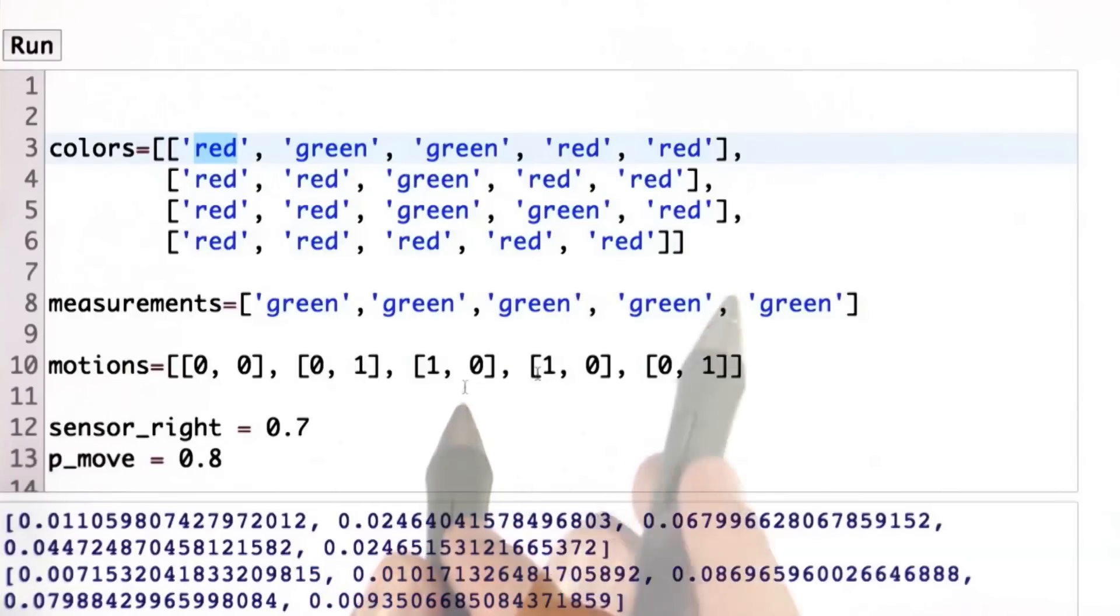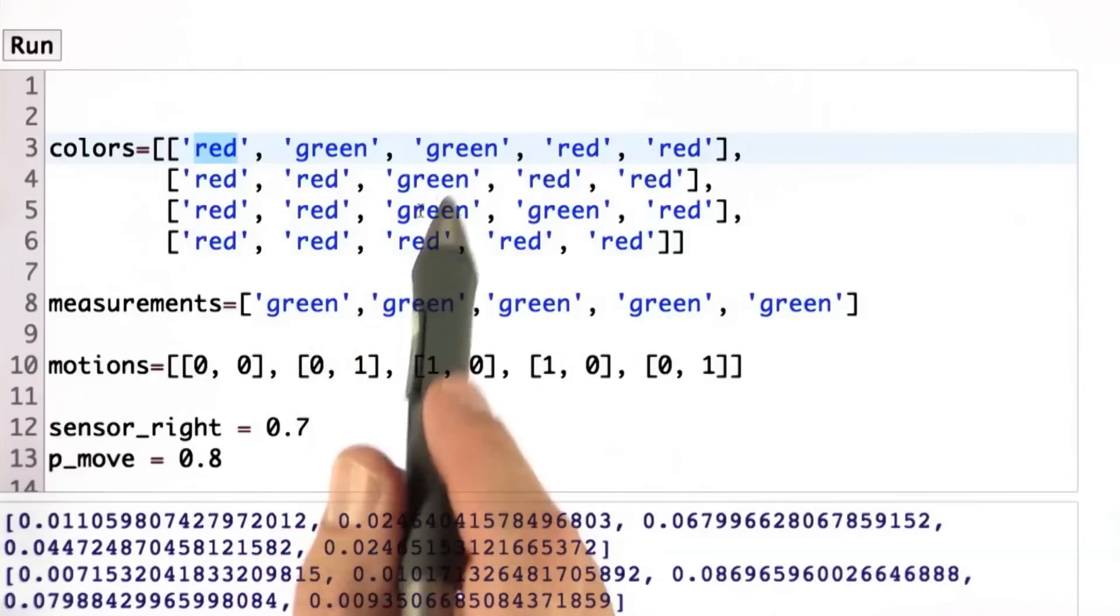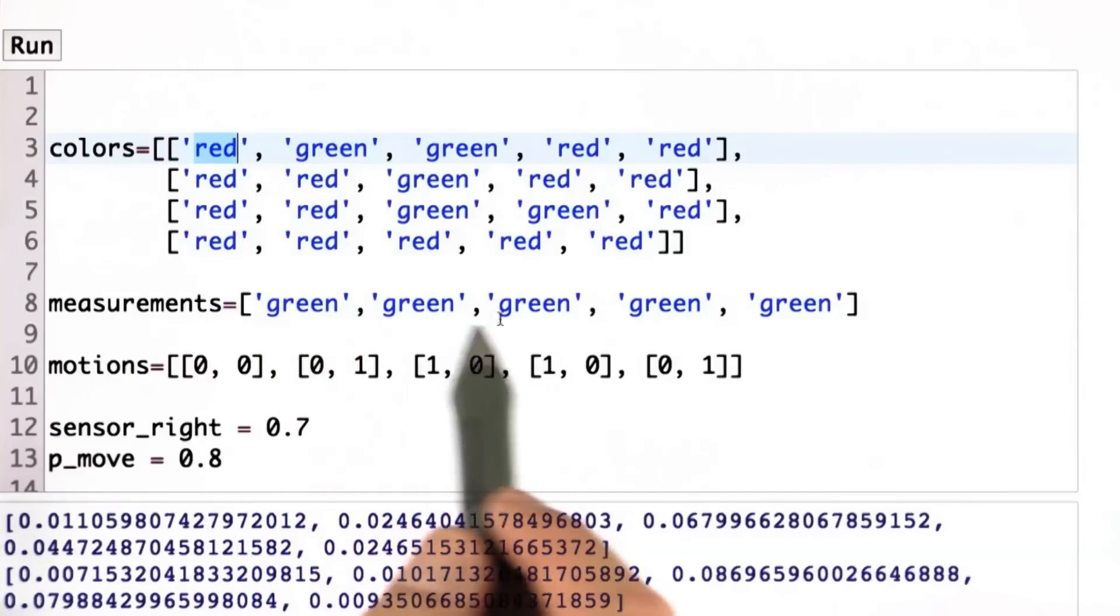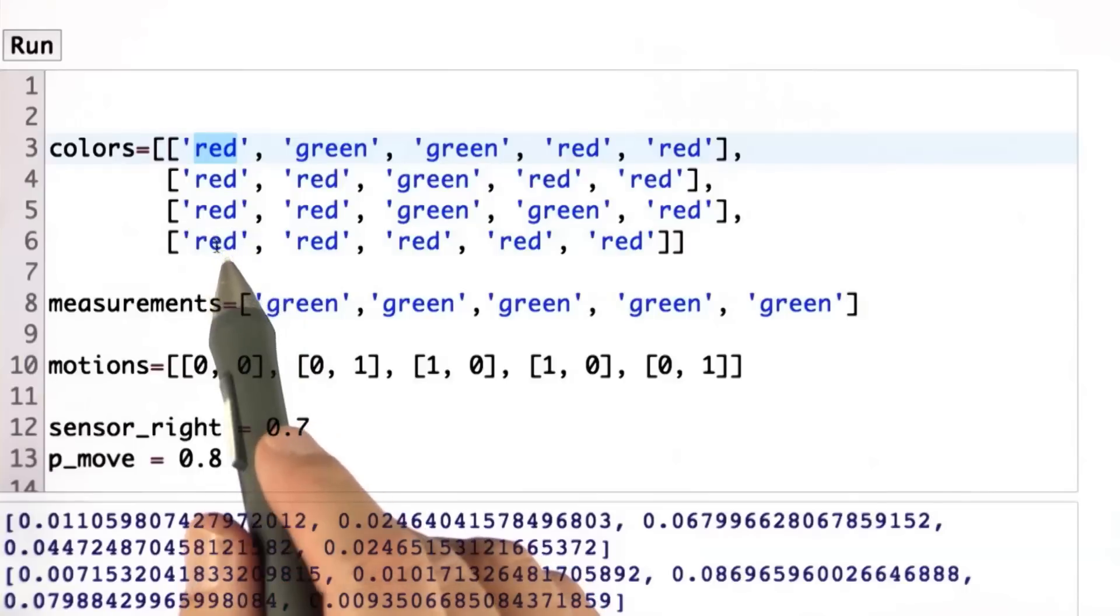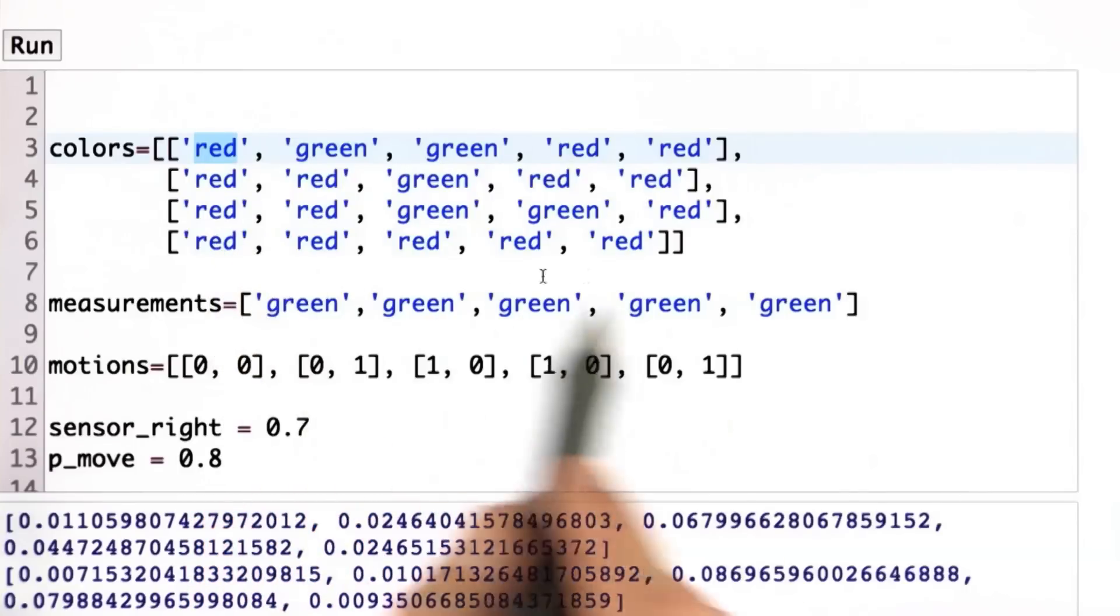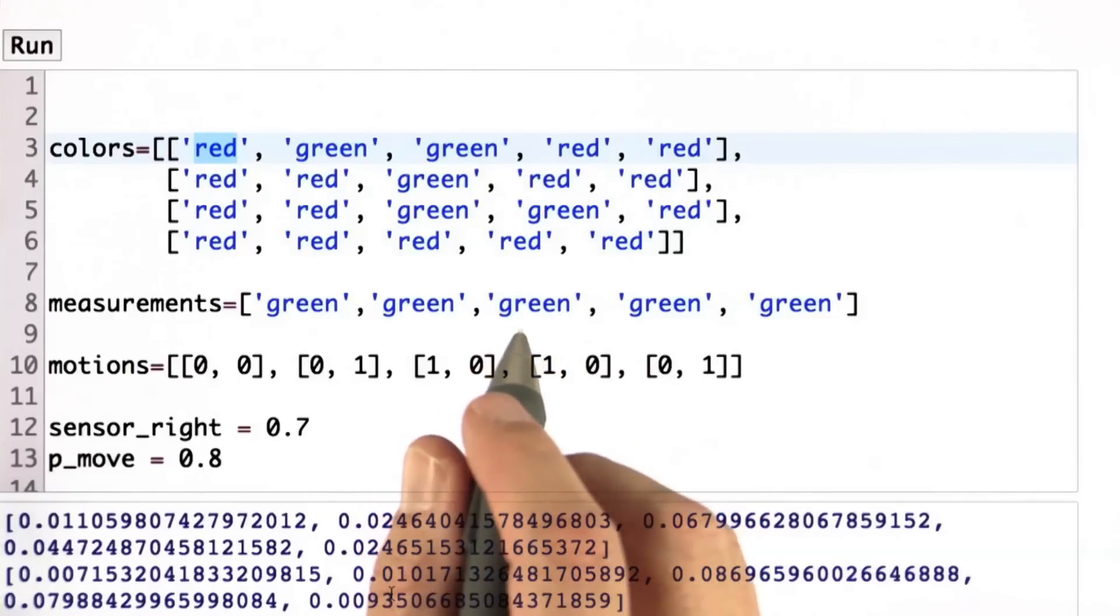So if you program this, you just have to replace the simple matching of a measurement of green with an image matching of an entire image you record with an image in your map. I leave this as an exercise because I can't do this in this Python environment here. But I congratulate you that you really managed to do something quite amazing, which is build an amazing piece of localization software.